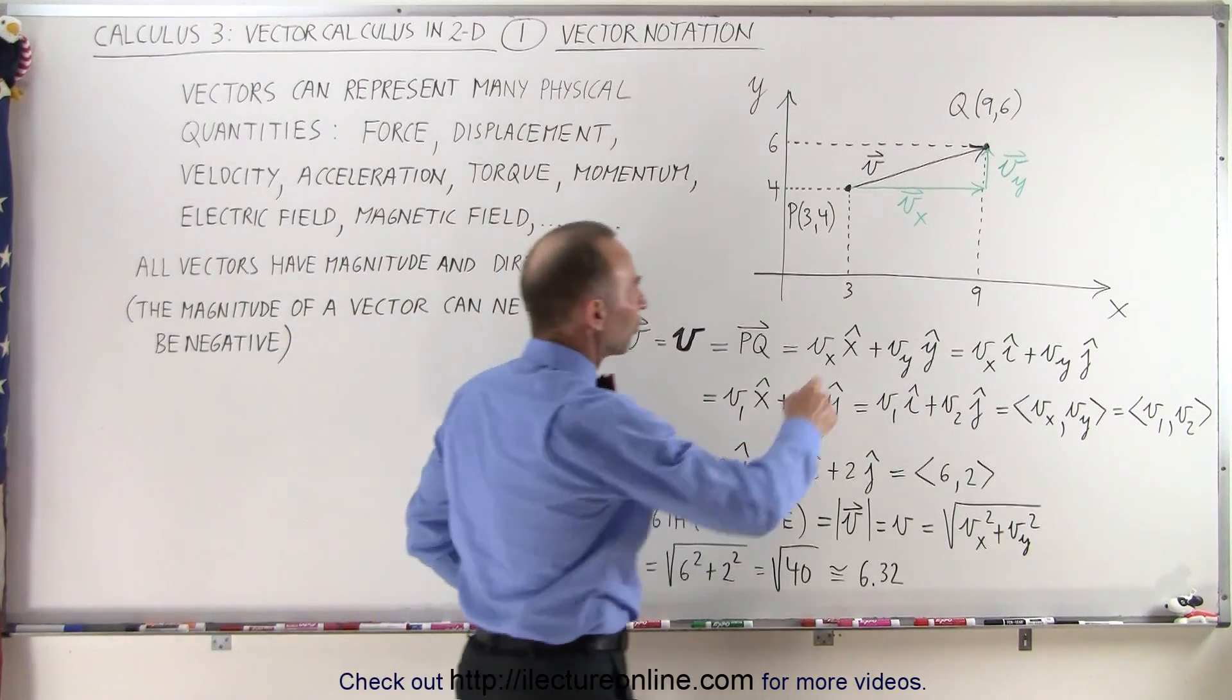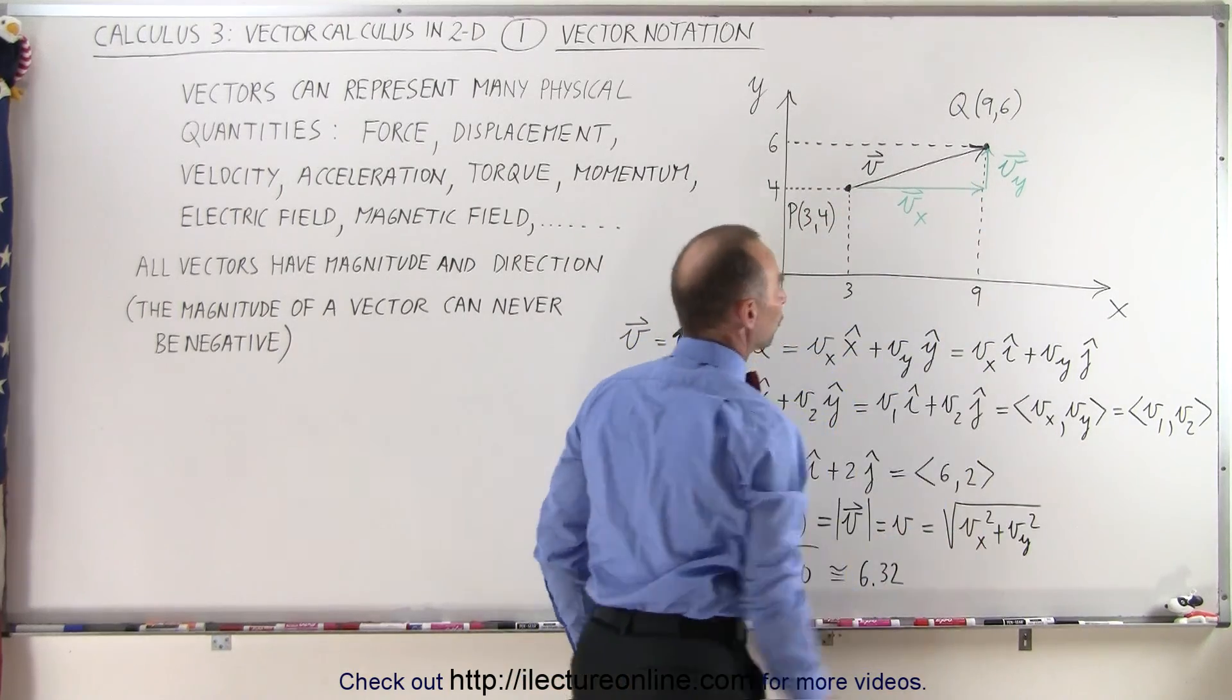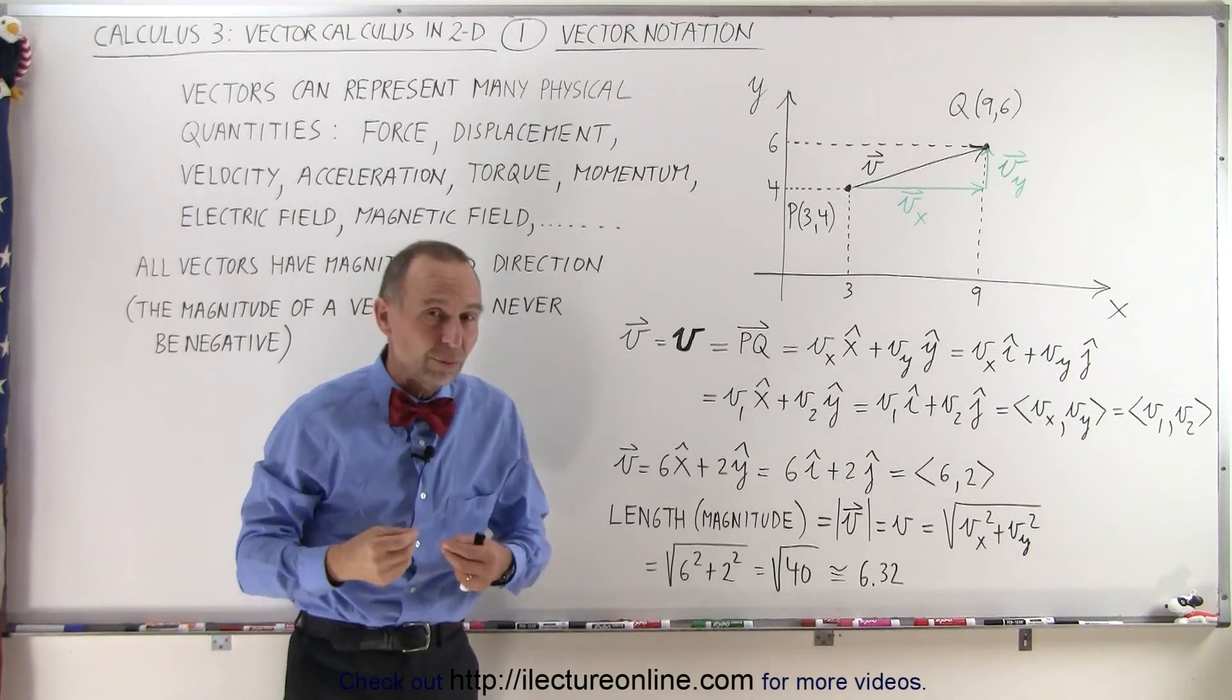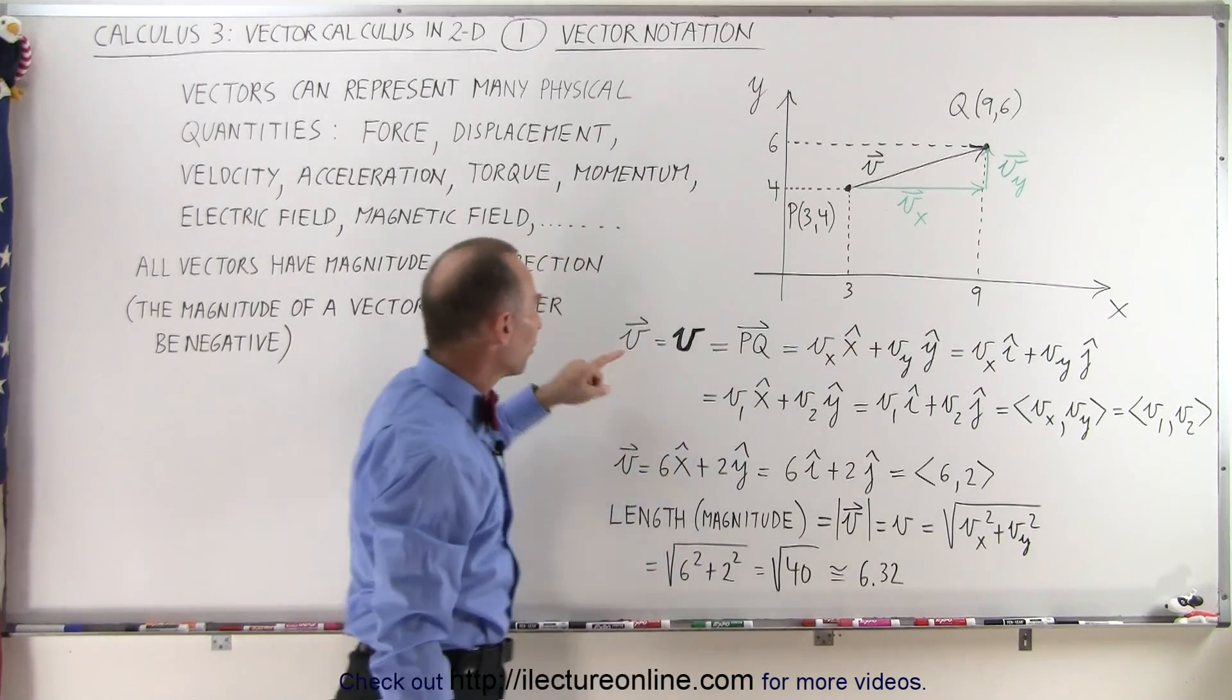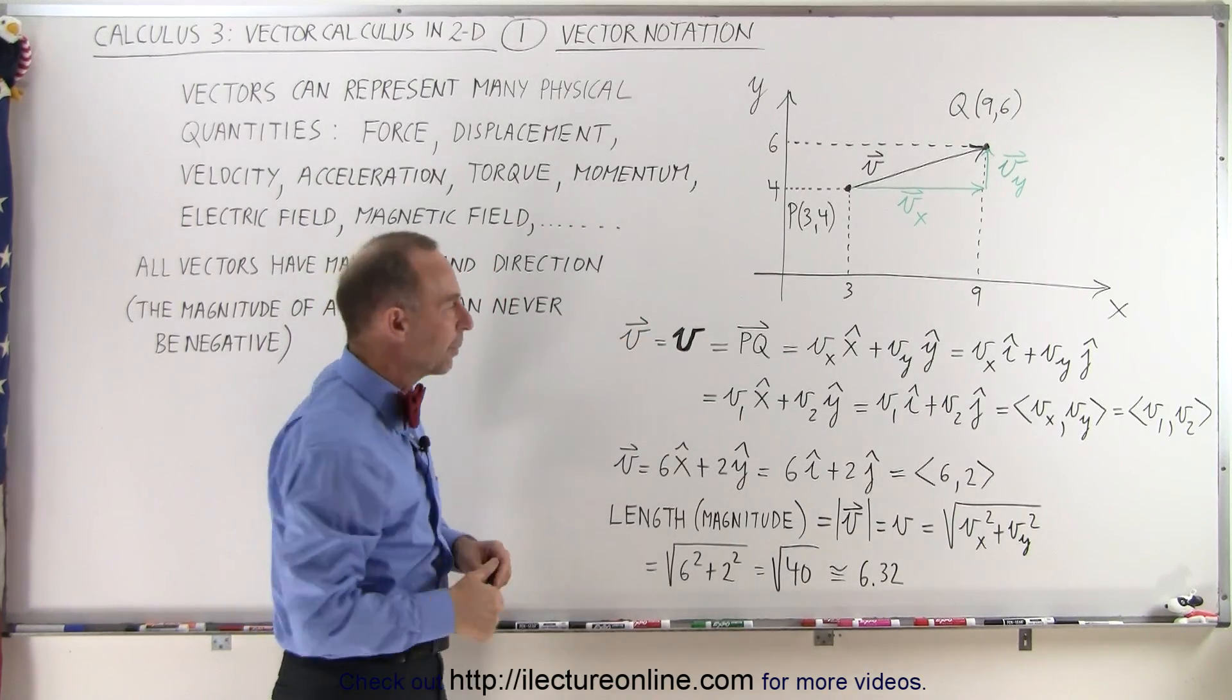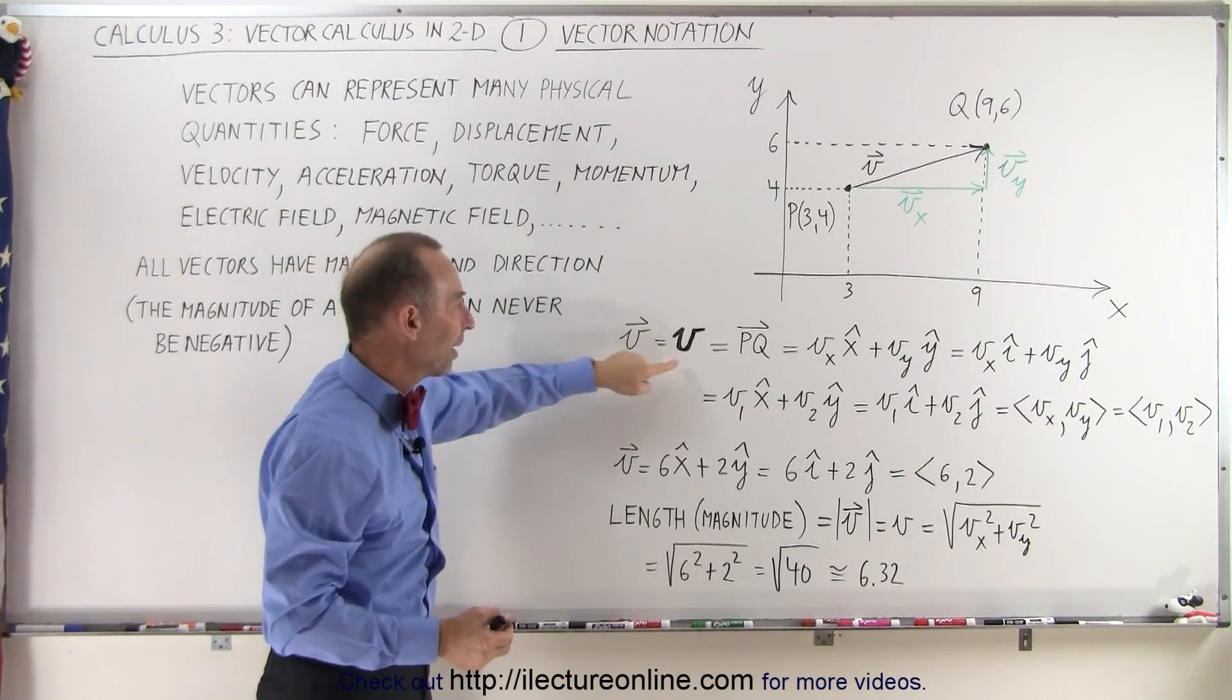Here we have a vector that starts at point 3,4 and ends at point 9,6. We label the first point P and the last point Q, and the vector connects those two. In this case, that vector probably represents a displacement - a distance and a direction from this point to that point. There are different ways to represent that on paper. If we call the vector V, we can draw a little arrow on top, which means it's a vector quantity. Without the arrow, we only mean the magnitude. In textbooks, they usually use a bold face V, printed as a fat V to indicate it's a vector.